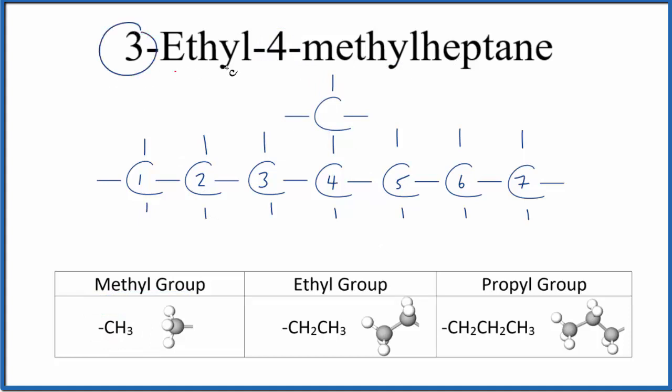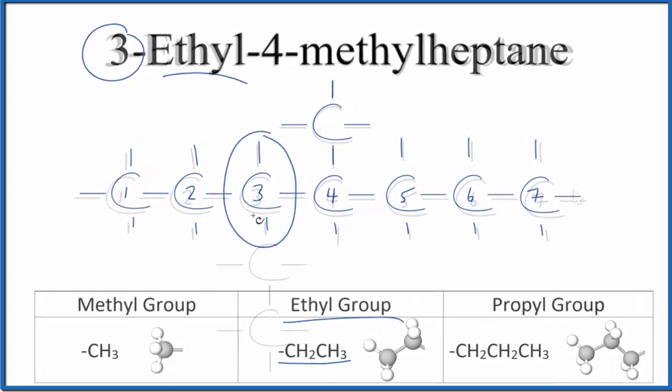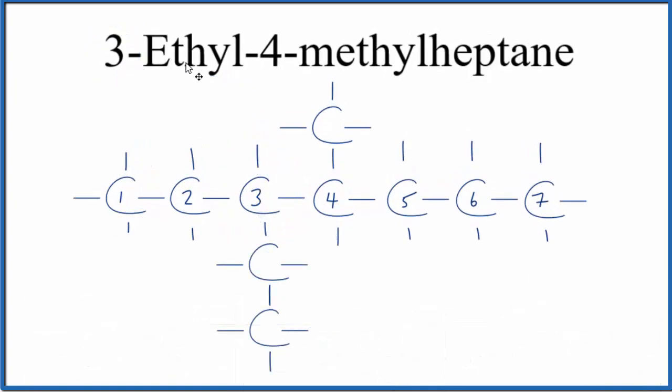So on the third carbon, we have an ethyl group. The ethyl group, that's CH2CH3. So we're going to put that on the third carbon here. So this is the formula, the structural formula for 3-ethyl-4-methylheptane.